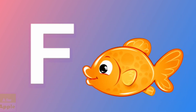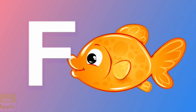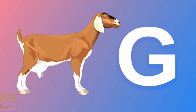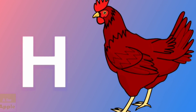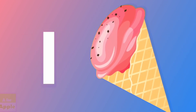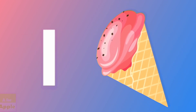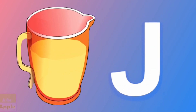F for fish. G for goat. H for hen. I for ice cream. J for jug.